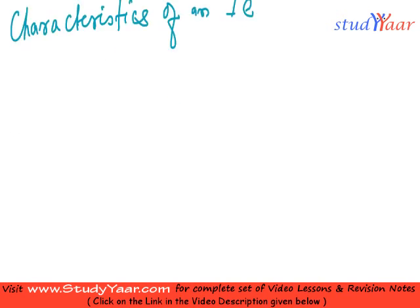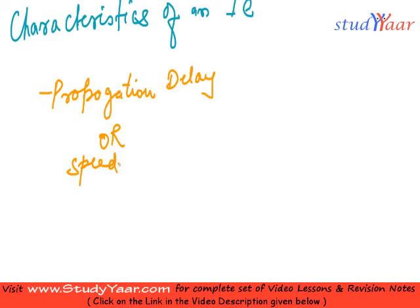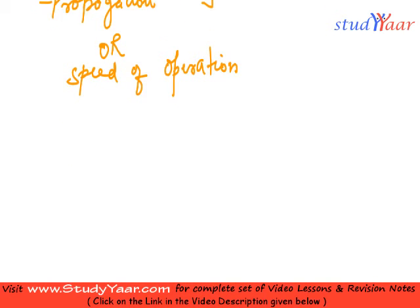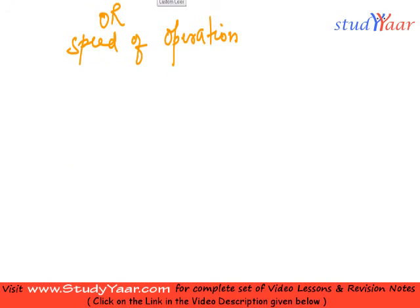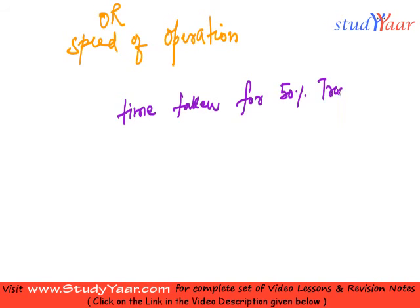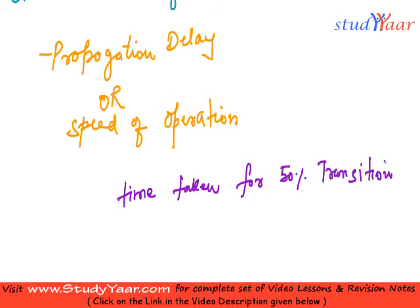My first characteristic is the propagation delay, also known as the speed of operation. It is the time it takes for you to get the output after applying the input. More technically, it is the time taken for a 50% transition from input to output.